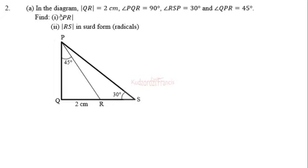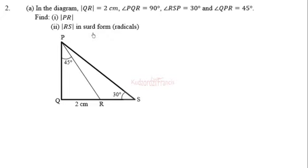I'll take my time to explain question 2a. In the diagram, QR is equal to 2 centimeters, angle PQR is 90 degrees, angle RSP is 30 degrees, and angle QPR is 45 degrees. Find: (i) the length of PR, and (ii) the length of RS in surd form or radicals.